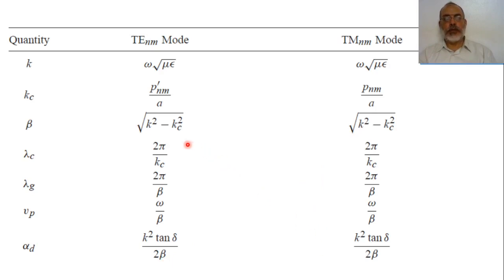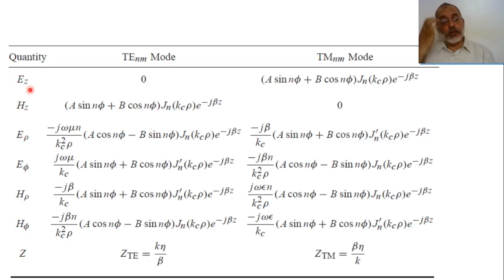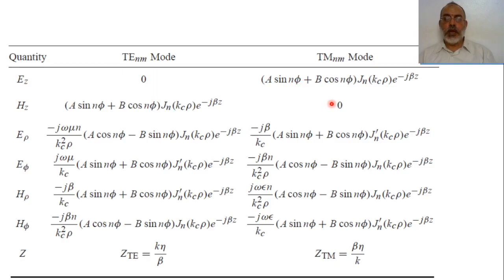These parameters are the same for all waveguides except for the value of Kc. For the transverse electric mode, the field components are derived starting from Hz; we don't have Ez. The transverse components E_rho, E_phi, H_rho, and H_phi are given accordingly. For the transverse magnetic mode, we have Ez but no Hz, and the transverse field components are given similarly.